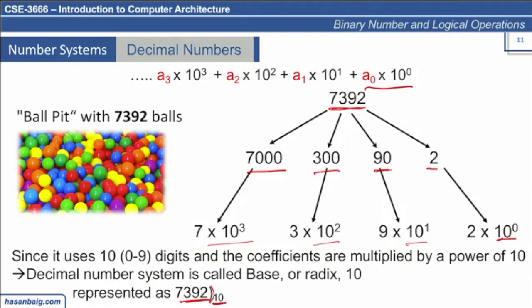So if I give you a task of writing, let's say, 346 in base 10, you would simply write 3, 4, 6 with the subscript base 10. This is how you represent a number in the base 10 system. So this is the basic one.